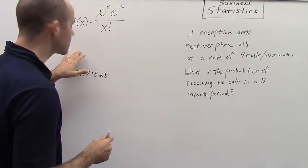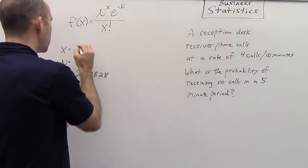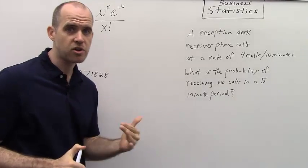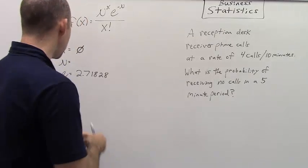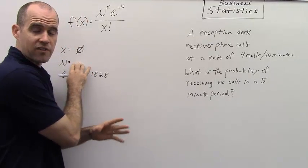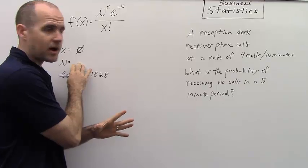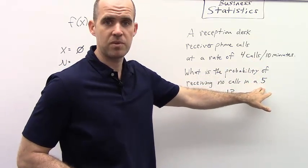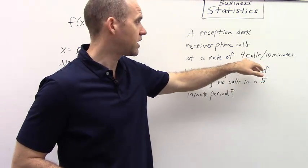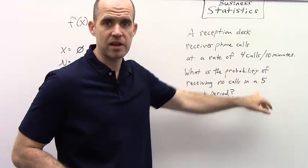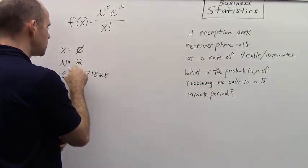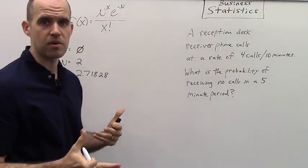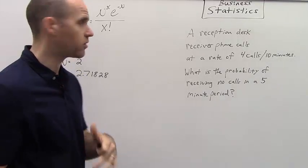All right, so let's fill in the blank here. Our X value, our F of X, we're looking for a value of zero. What's the probability of zero phone calls coming in over this period of time? Now, the mean number of occurrences within this time, we need to think a little more carefully about. If we get a rate of four calls every 10 minutes, but we're going to be gone for a five-minute period, then we're looking at a rate of two calls every five minutes. So in this case, we would just simply write two because our time interval is five minutes, so we want to measure out the mean number of occurrences within the time period we're interested in.